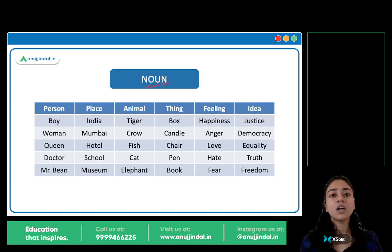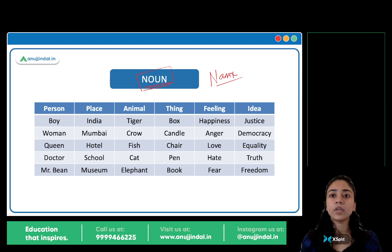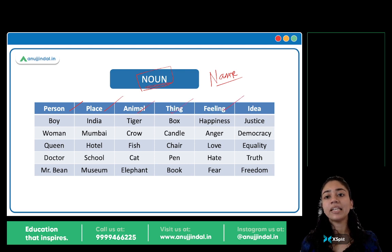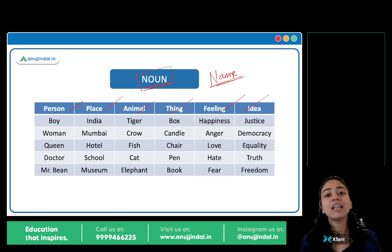What is a noun? A noun is a name. Kis ka naam? Kisi ka bhi naam ho sakta hai — it could be the name of anything: person, place, animal, thing, feeling, or idea.